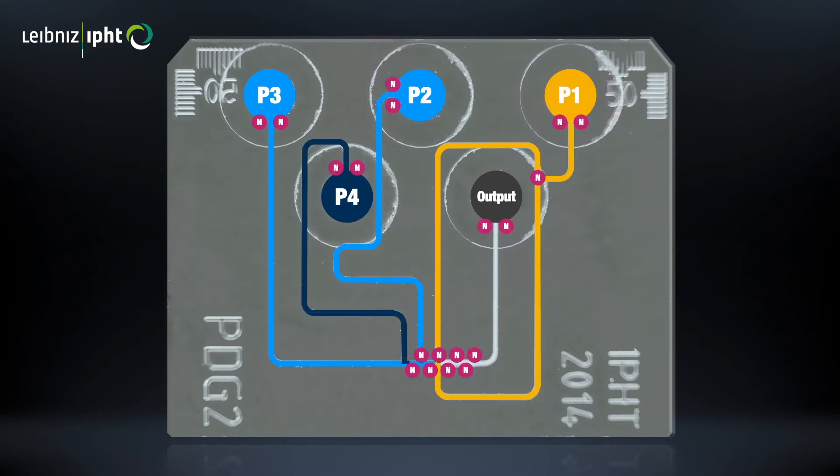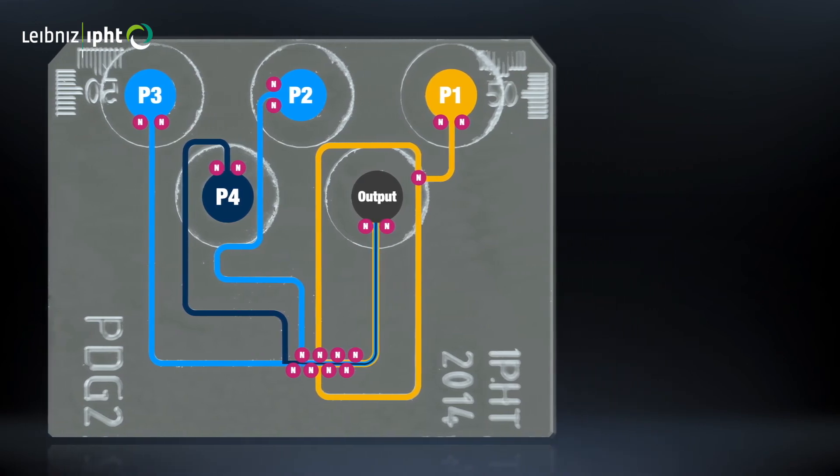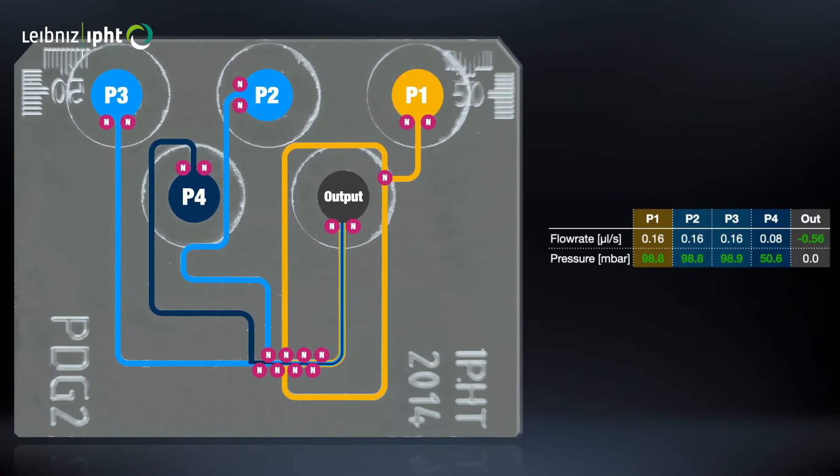It precisely predicts the operation parameters for laminar coflow, which means that all colors you see coexist next to each other without mixing.